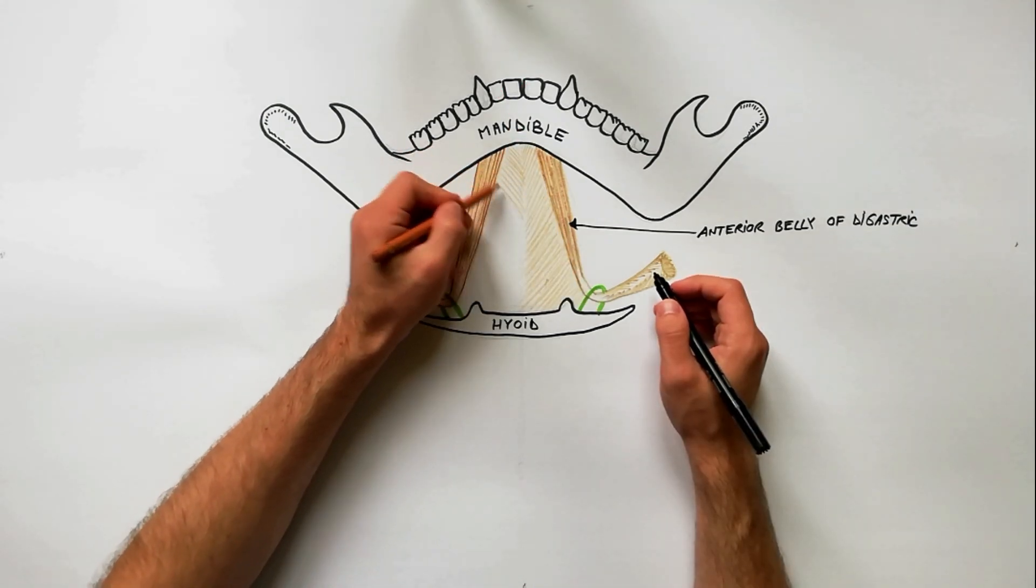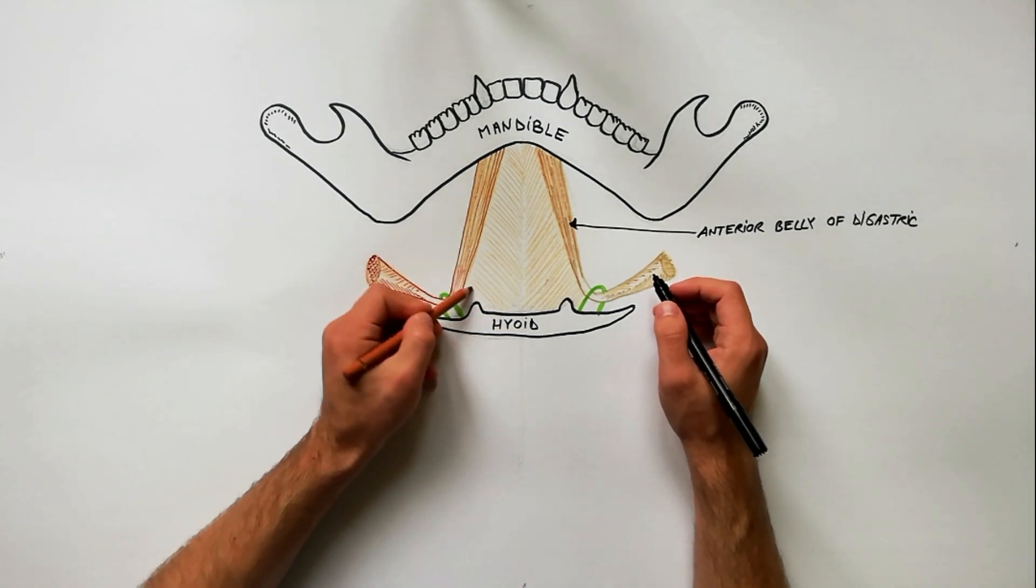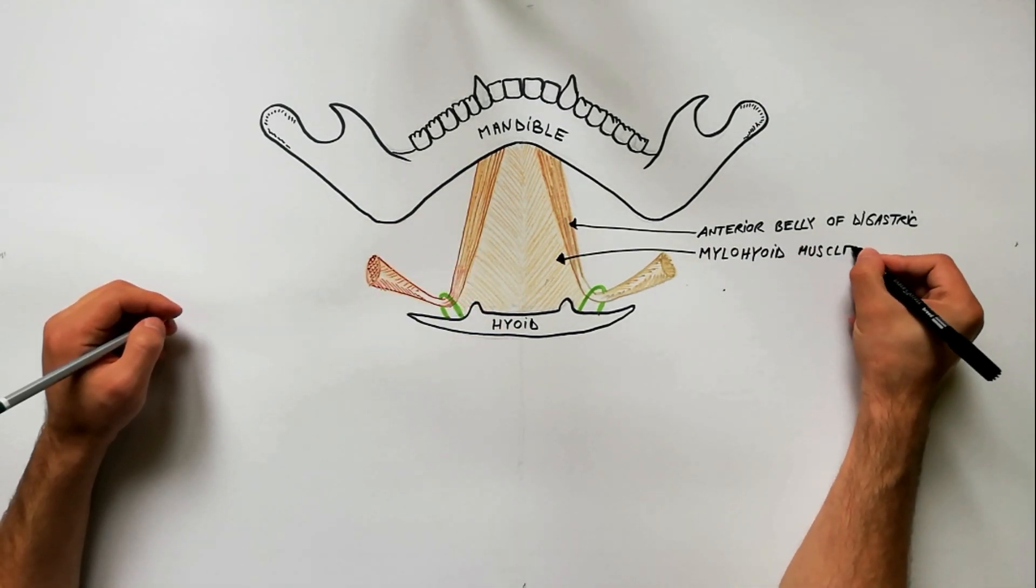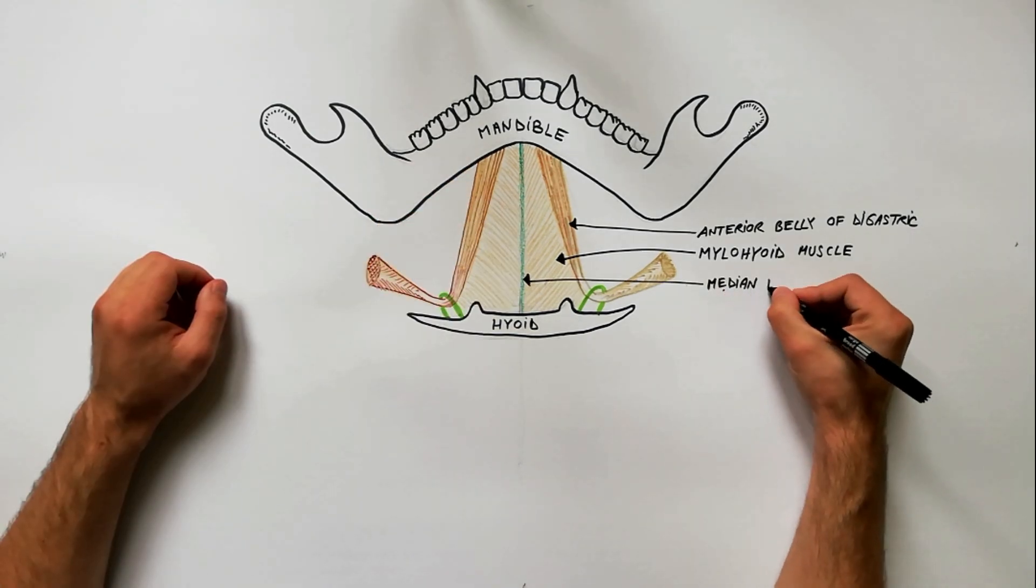The floor of Submental Triangle is formed by the two myelohyoid muscles meeting at the median fibrous raphe extending from symphysis menti to the hyoid bone.